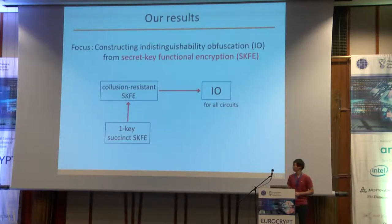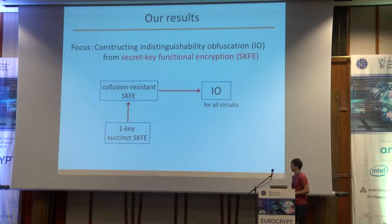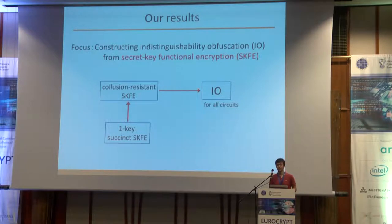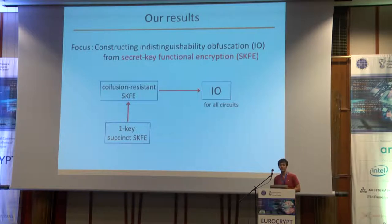In this work, we focus on constructing indistinguishability obfuscation, I.O., based on secret-key functional encryption, SKFE. We show how to construct I.O. for all circuits based only on collusion-resistant SKFE. We also show that we can construct collusion-resistant SKFE based on succinct SKFE that can issue only a single functional key.